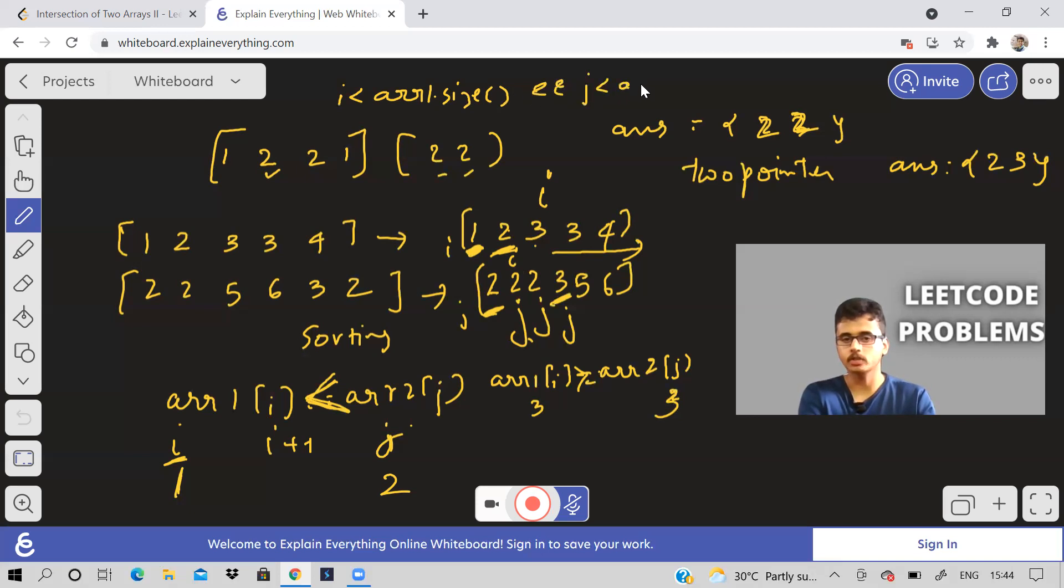Until when should I do? Until I is less than array one size. The first pointer should not reach the end. Array one, as well as second pointer, it should not go outside array two.